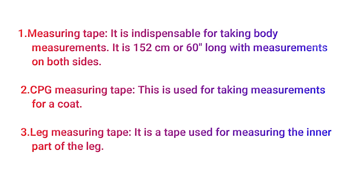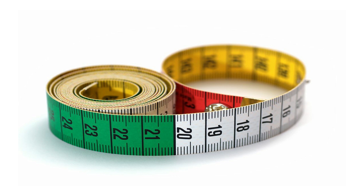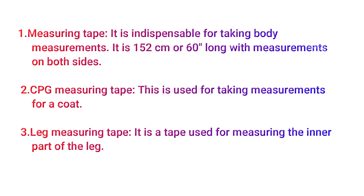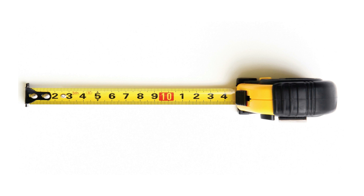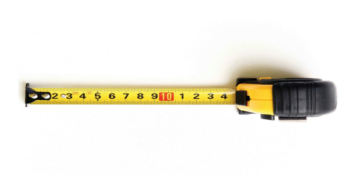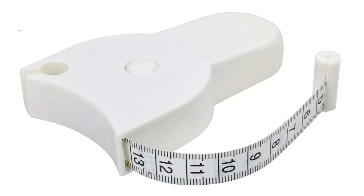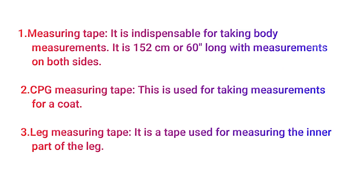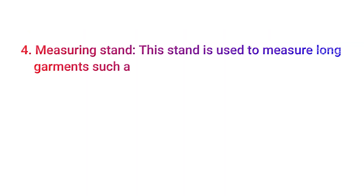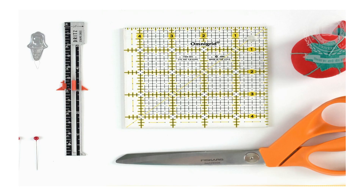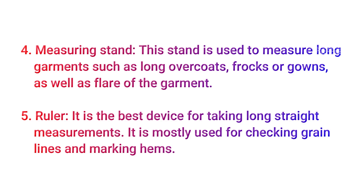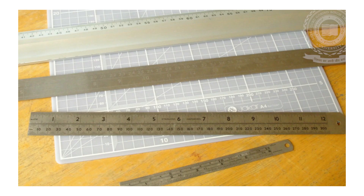Measuring tape is indispensable for taking body measurements. It is 152 cm or 60 inches long with measurements on both sides. CPG measuring tape is used for taking measurements for a coat. Leg measuring tape is used for measuring the inner part of the leg. Measuring stand is used to measure long garments such as long overcoat, frocks or gowns, as well as the flare of the garment. Ruler is the best device for taking long straight measurements and is mostly used for checking grain lines and marking hems.